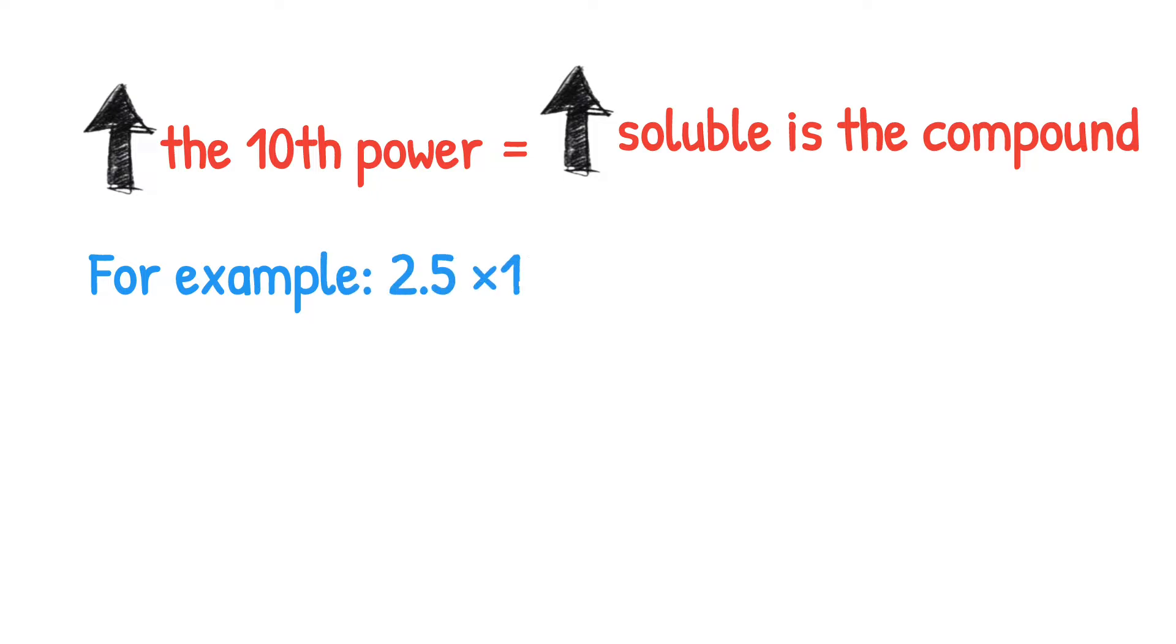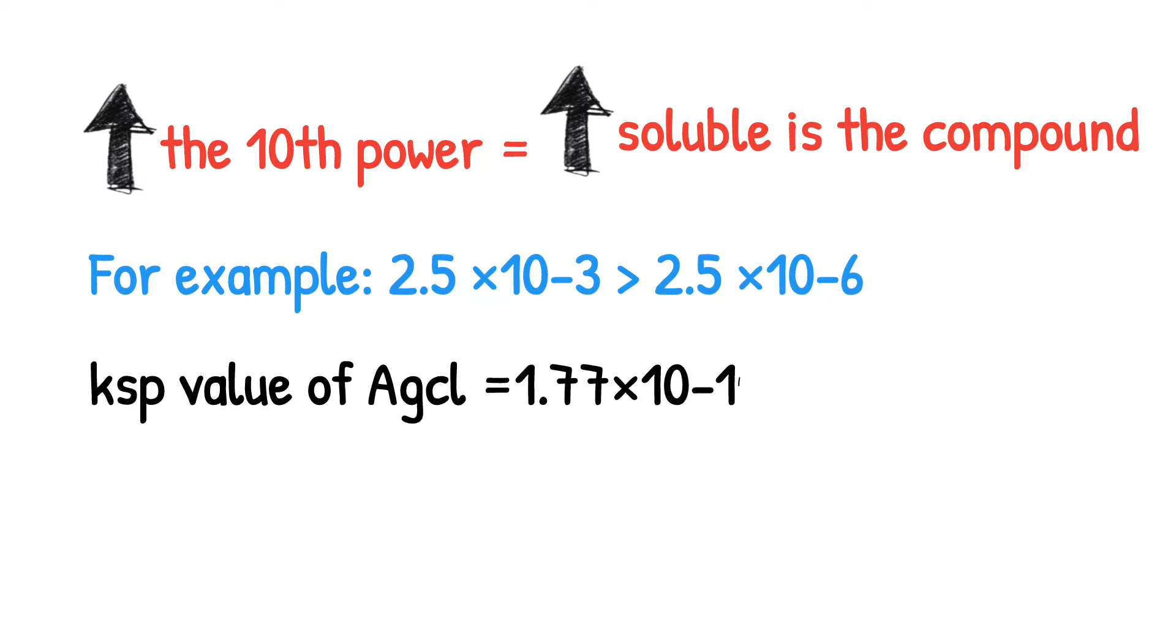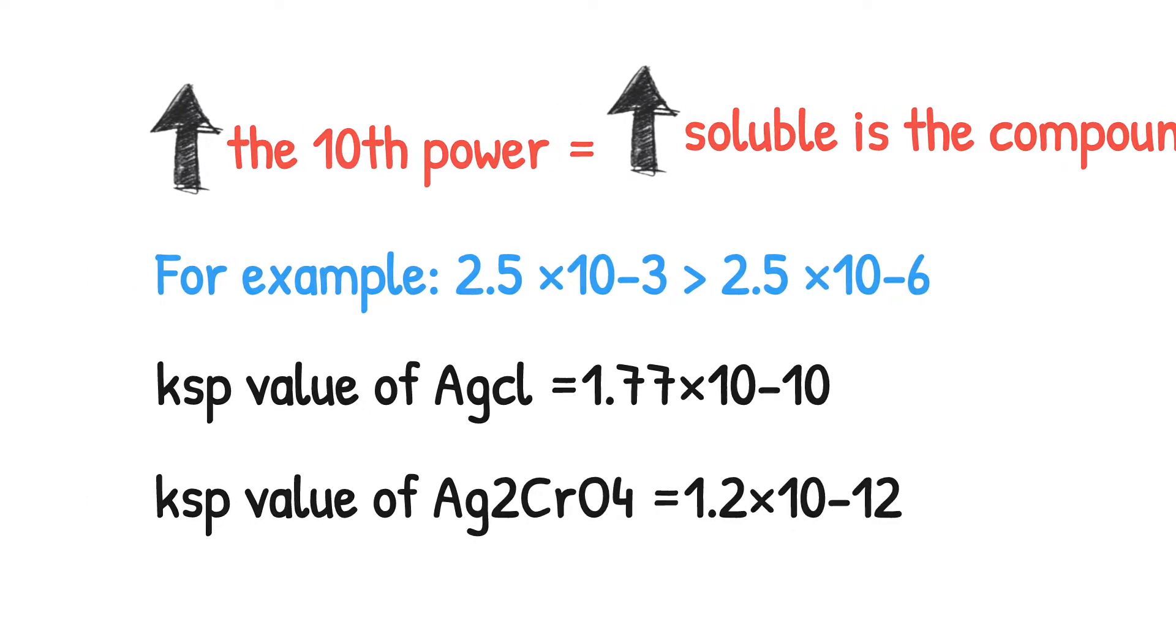The KSP value of AgCl is 1.77 × 10^-10, and KSP value of Ag2CrO4 is 1.2 × 10^-12. AgNO3 will be added from the burette into the solution containing NaCl and indicator is added.